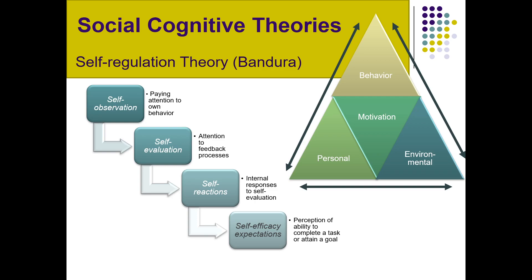All of that leads into your self-efficacy expectations. In the future, what has happened so far will affect your sense of whether you can complete a task or attain a goal. Self-efficacy propels us going forward. If we feel competent and likely to be able to complete a task or attain a future goal, we're going to be more goal-oriented. On the other hand, if you've had experiences that lead you to believe you're not likely to be successful in the current context, you might avoid that task or quit. Self-efficacy is informed by our previous behaviors, feedback, evaluations, and self-reflections, and that helps to inform what we think will happen in the future.